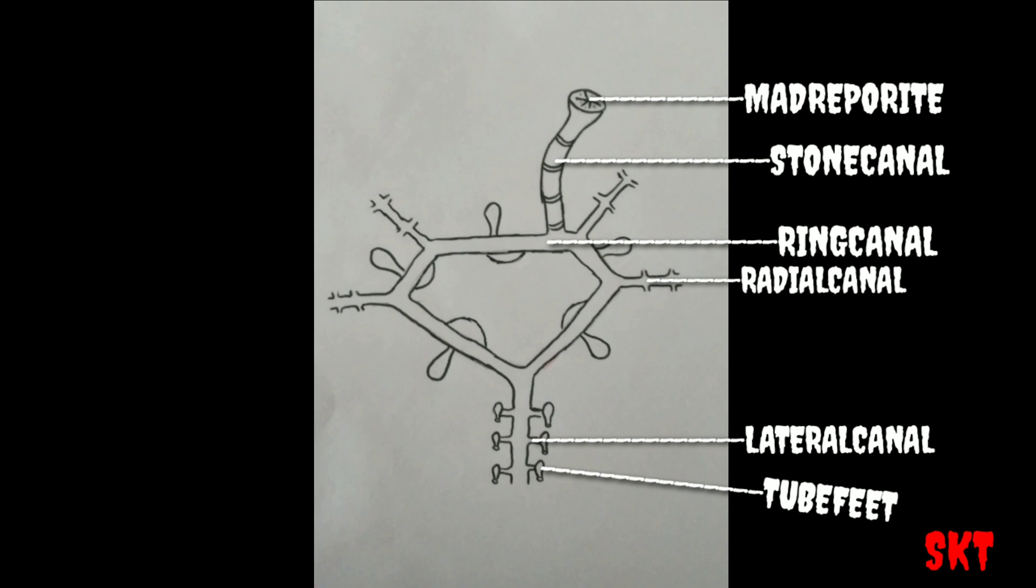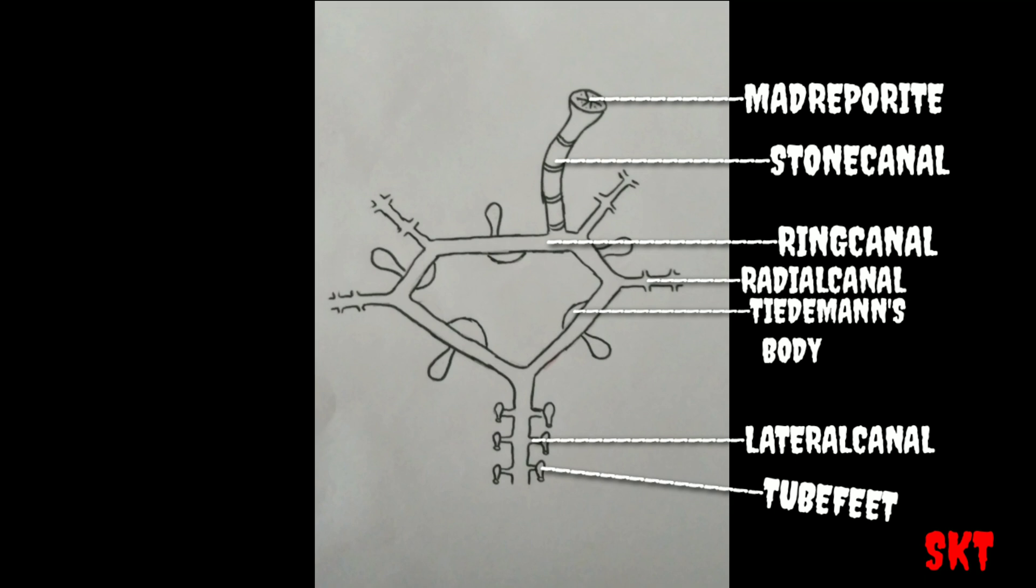I think we forgot something. Yeah, the Tiedemann's bodies. These are the projections from the ring canal internally. These are small, yellowish, rounded, granular bodies. The function is still unknown but some of the scientists suggest that these are lymphatic glands to manufacture amoebocytes of water vascular system in starfish.